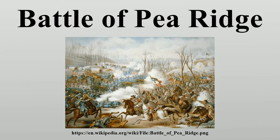Curtis moved his approximately 10,250 federal soldiers and 50 artillery pieces into Benton County, Arkansas, along Little Sugar Creek. Federal forces consisted primarily of soldiers from Iowa, Indiana, Illinois, Missouri, and Ohio. Over half the federal soldiers were German immigrants, grouped into the 1st and 2nd Divisions, under the command of Brigadier General Franz Sigel, himself a German immigrant.